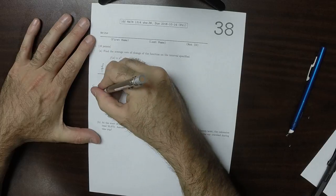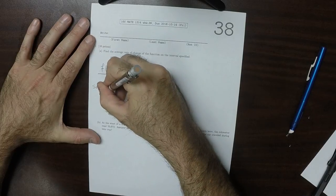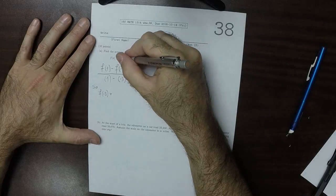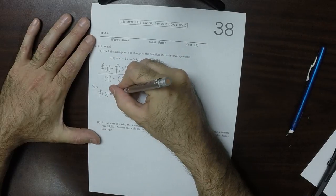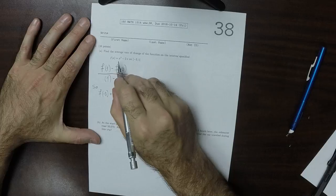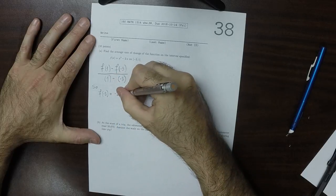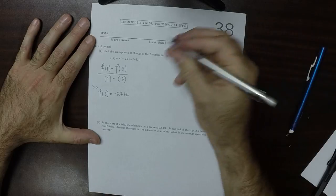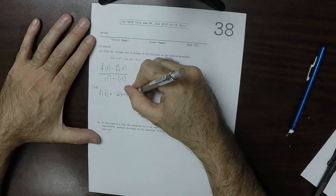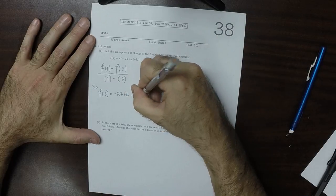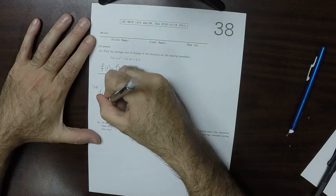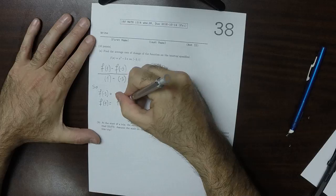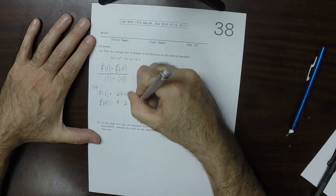I'm going to do it in pieces. So f evaluated at negative 3, that would be negative 27, and then plus 6, so that would be negative 21. And f evaluated at 1, that would be 1 minus 2, so that would be negative 1.